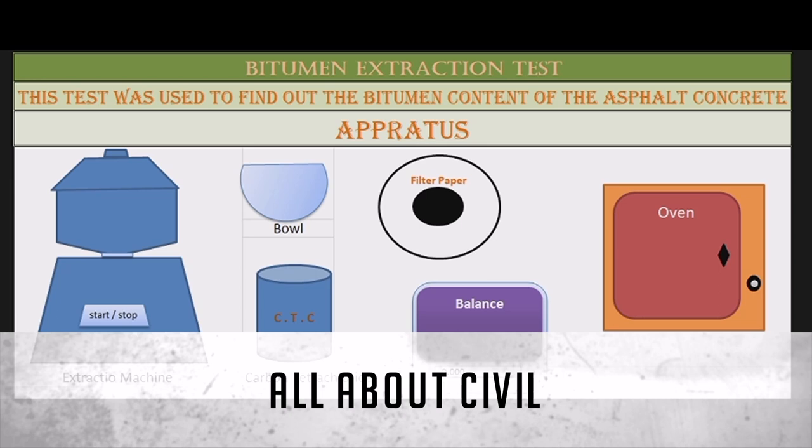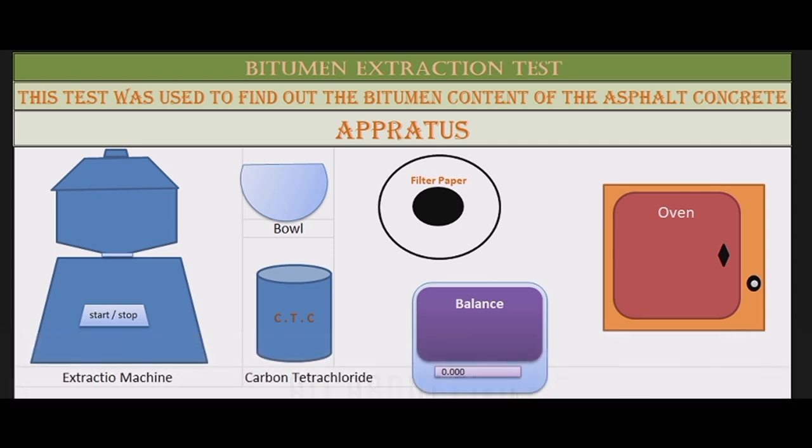Welcome to my YouTube channel, All About Civil. In today's video, we will see the bitumen extraction test. This test follows ASTM D2172 code and is used to find out the bitumen content of the asphalt concrete, which is the road carpeting material.